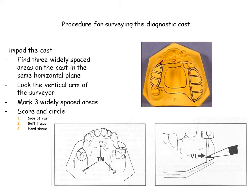Some method of recording the relation of the cast to the vertical arm of the surveyor must be used, so that it may be returned to the surveyor for future reference. One method is to place three widely divergent dots on the tissue surface of the cast with the tip of the carbon marker, having the vertical arm of the surveyor in a locked position. Preferably these dots should not be placed on areas of the cast involved in the framework design, and then the dots should be encircled with a colored pencil for easy identification. A second method is to score or mark two sides in the dorsal aspect of the base of the cast with a sharp instrument held against the surveyor blade. By tilting the cast until all three lines are again parallel to the surveyor blade, the original cast position can be re-established. The scratch lines will be reproduced in any duplication, thereby permitting any duplicate cast to be related to the surveyor in a similar manner.